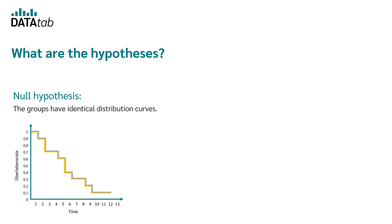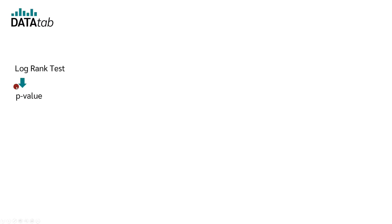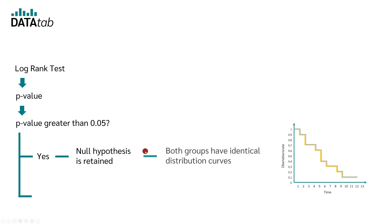The alternative hypothesis is that the groups have different distribution curves. As always with a statistical hypothesis test, you get a p-value at the end of the log rank test. The significance level is set to 0.05 in most cases. If the calculated p-value is greater than 0.05, the null hypothesis is retained — based on the available data, it is assumed that both groups have the same distribution curve. If the p-value is smaller than 0.05, the null hypothesis is rejected.